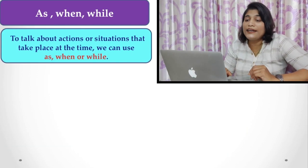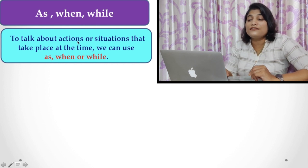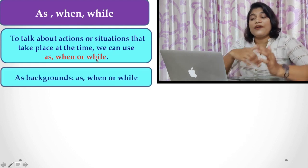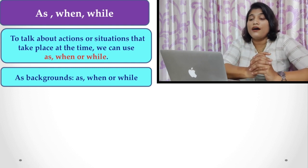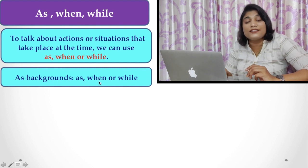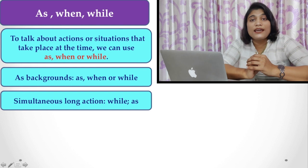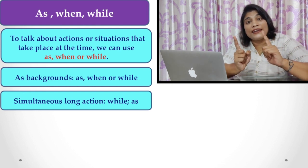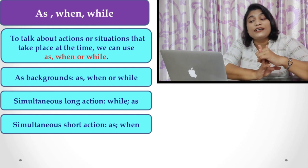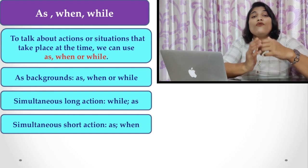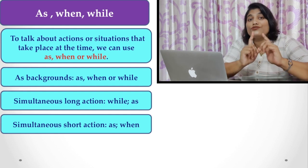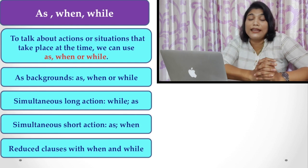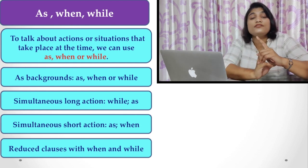First of all, you have to know that when we are talking about an action or situation that takes place at a given time, we can use as, when, or while. There are some areas where we choose these words as our backgrounds. When talking about simultaneous long action, we may use while and as but not when. For simultaneous short action, we may use as and when, but not while. And to reduce clauses, sometimes we have to use when and while.